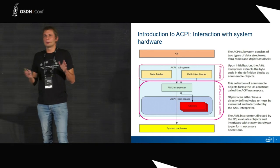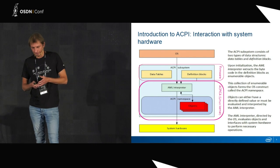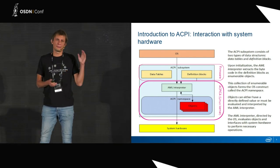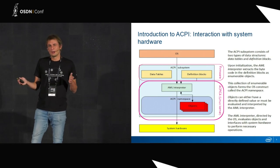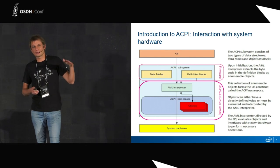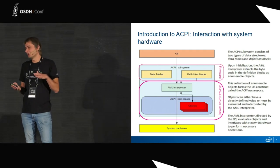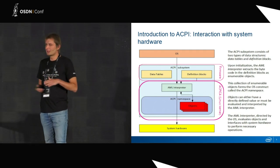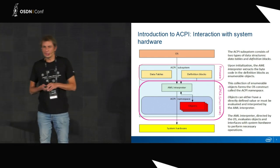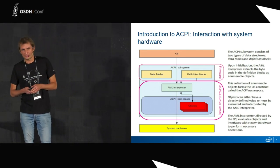ACPI could be roughly described as a glue layer between firmware and the operating system. Starting from firmware which provides the tables, it goes through the interpreter inside the operating system. In Linux kernel, for example, it's provided by ACPI-CA, and then communicates with system hardware.